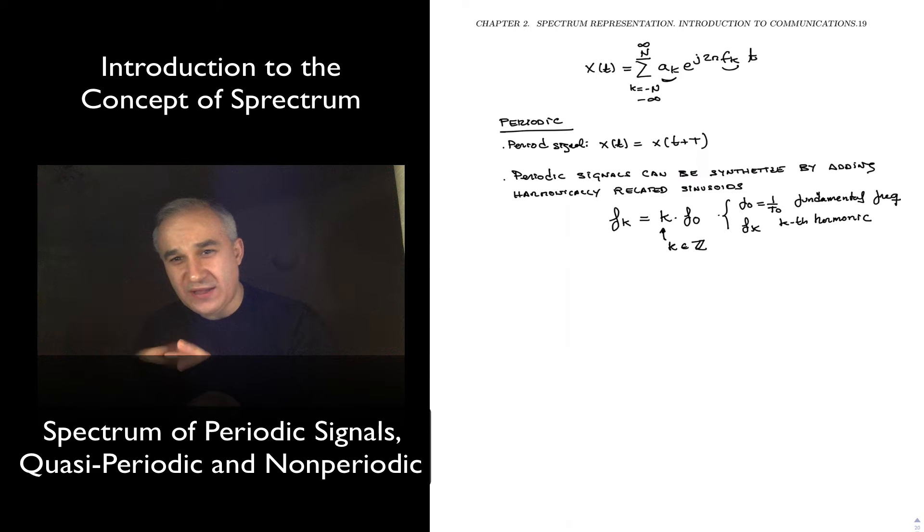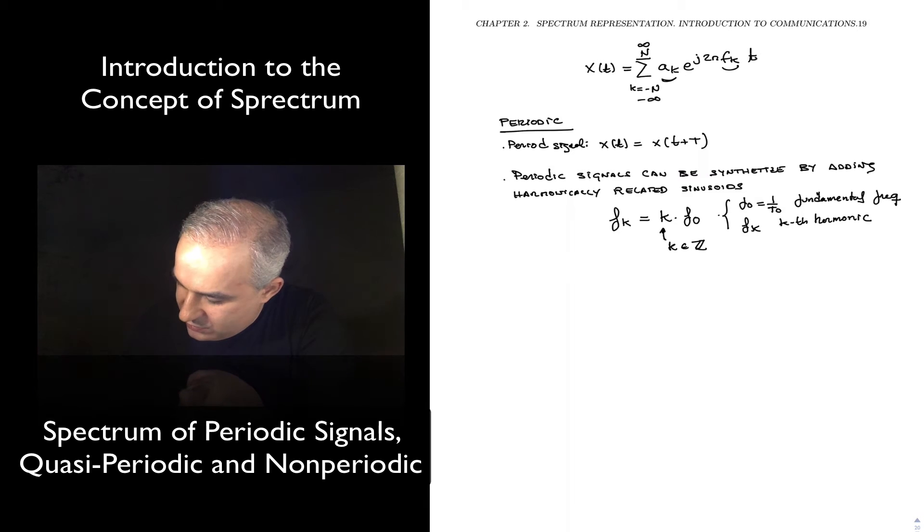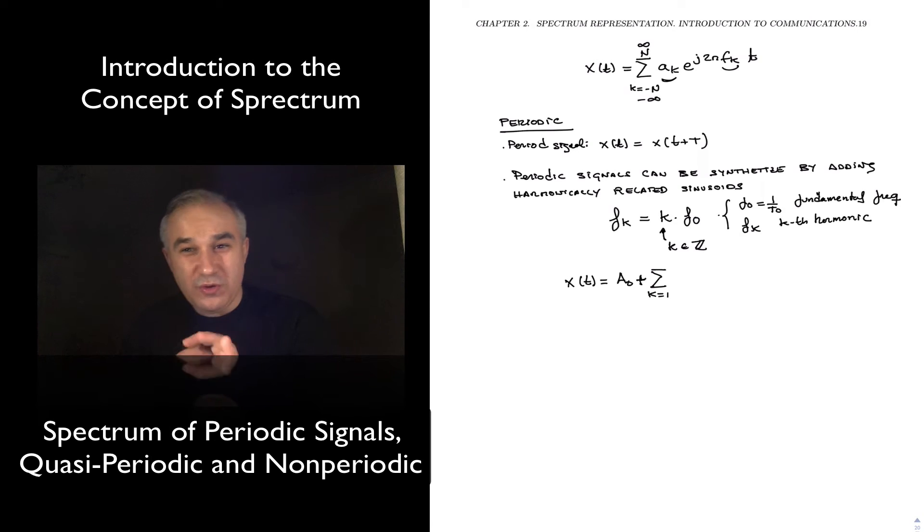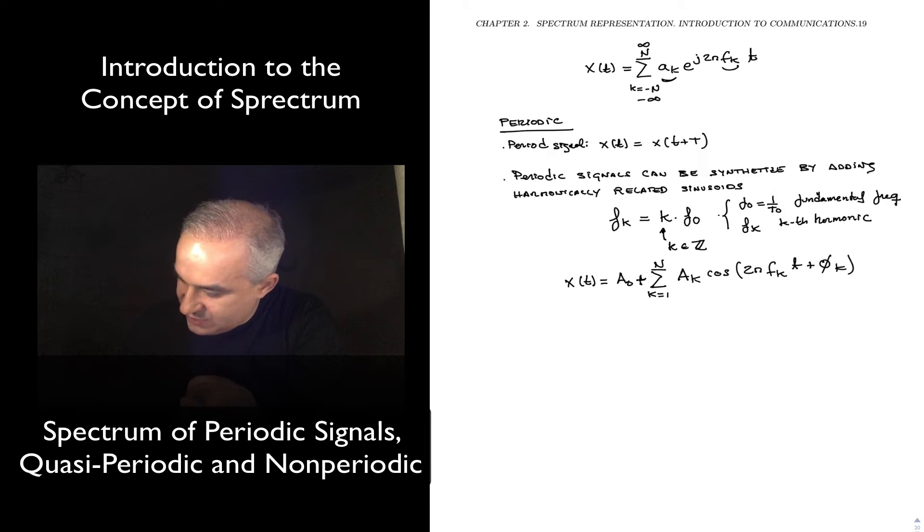So the expression that we had in the previous video, whether you are thinking about x(t) as having a_0 plus a sum from k equals 1, I'm going to do a finite to n, a_k cosine 2πf_k*t plus phase, or in compact form, as what we have here.